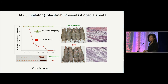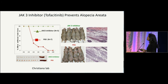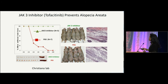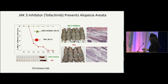This led to preclinical studies looking at potential use of Janus kinase inhibitors in alopecia areata in the C3H hedge mice. They were able to show that use of the JAK3 inhibitor tofacitinib actually prevented development of alopecia areata in these mice. You can see the wild-type or untreated mice who develop these patchy areas of hair loss, whereas the JAK3 inhibitor-treated mice have no hair loss.